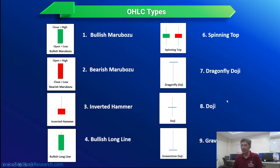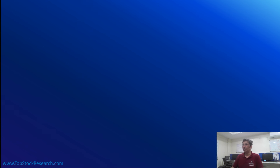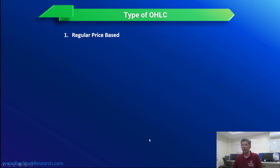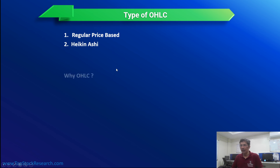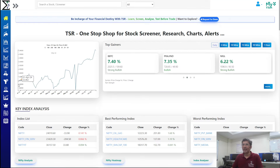Each candlestick type — each OHLC reading — tells you a lot about the system. We don't want to go too deep into candlestick patterns since this session is on OHLC. Let's see how to use OHLC directly. Type 1 is regular price-based OHLC; another variation is Heikin Ashi, which also has open, high, low, close but is calculated differently.